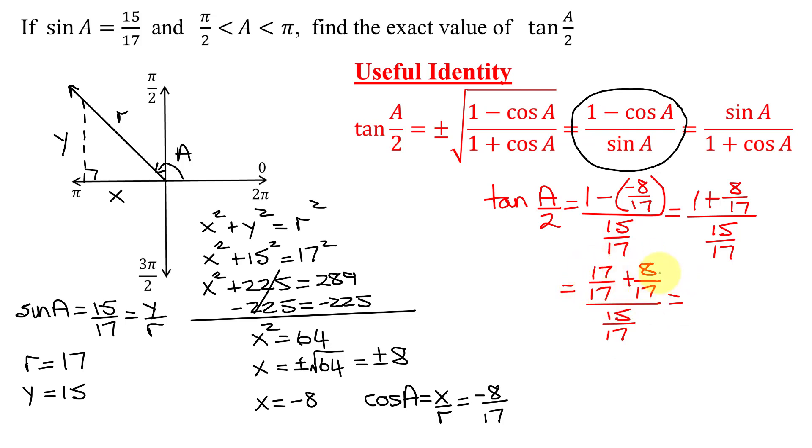Now, adding the fractions in the numerator, 17 plus 8 is 25/17. That's my fraction in the numerator. And how do we divide that by another fraction? When you divide fractions, you take the fraction in the numerator and multiply it by the reciprocal of the fraction in the denominator. What's the reciprocal of 15/17? It is 17 over 15.